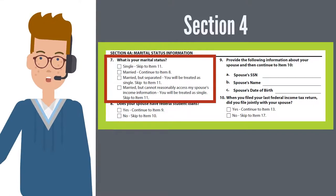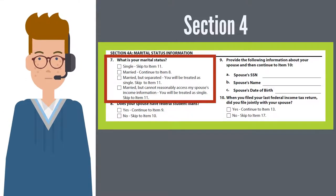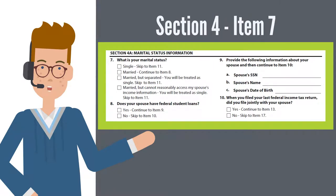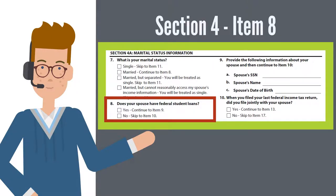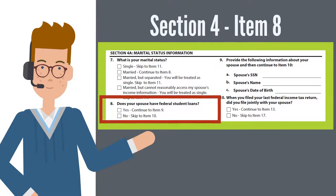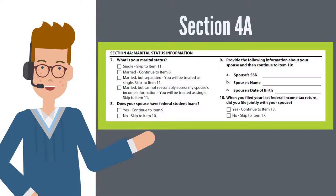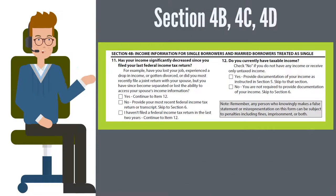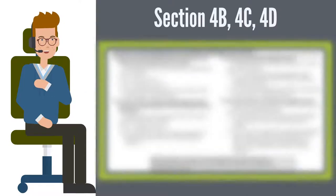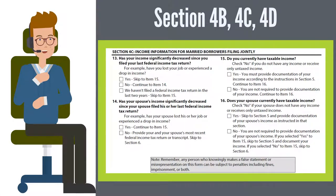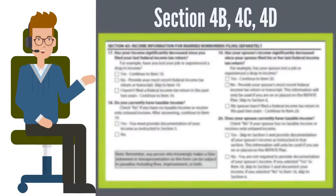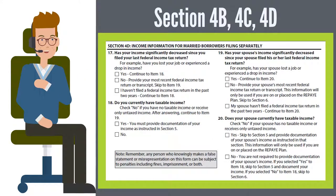Item 7 asks your marital status and your next step is based on your answer. Pay careful attention to item 7, as providing conflicting information in this section often leads to delayed or rejected applications. Item 8 asks about your spouse's federal student loans — do not include any private loans when considering your answer. Review section 4a carefully and proceed as directed. The remaining pieces of section 4 ask about taxable income or if that income has decreased since last filing taxes. Remember, you are not required to provide documentation of your income if you state you do not currently have taxable income.